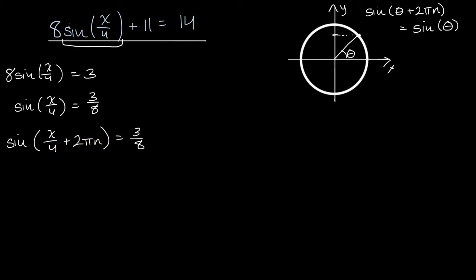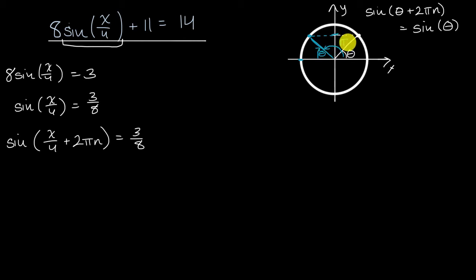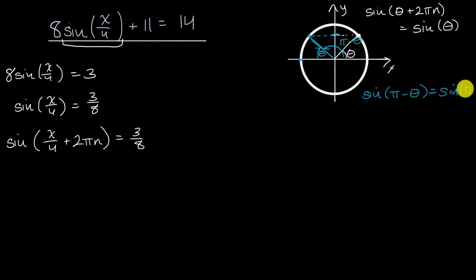We also need to remind ourselves that if we have theta here and sine of theta maps to a certain Y value, there's one other point on the unit circle with the same sine — right over here, where the Y coordinate is the same. If we start at π radians and subtract theta, we get the same value. So this angle can be viewed as π minus theta, and sine of π minus theta equals sine of theta.